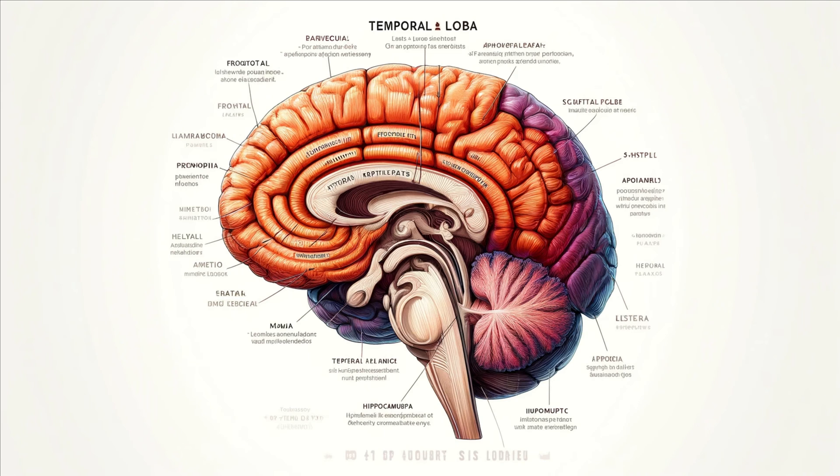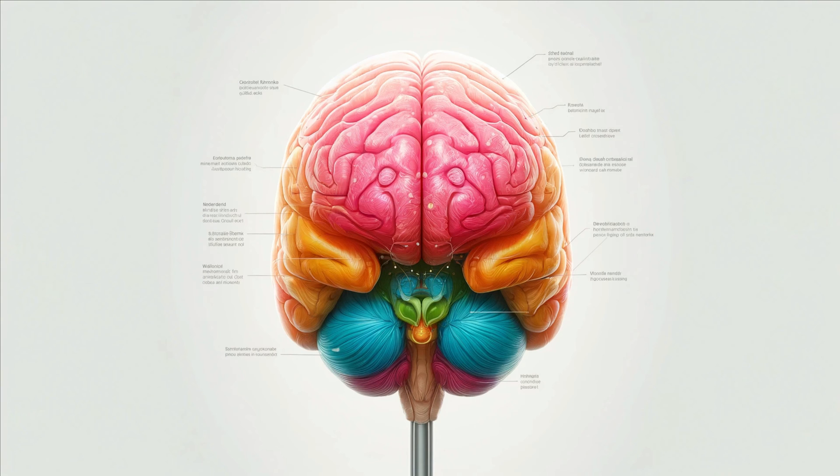The temporal lobe, found beneath the frontal and parietal lobes, is crucial for auditory perception, memory, and language comprehension. The hippocampus, located here, is essential for forming new memories.